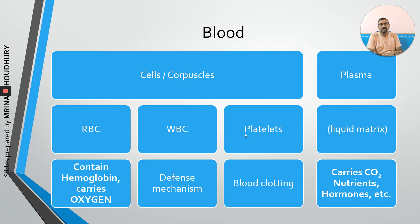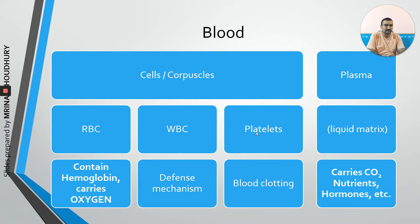WBCs and platelets are not involved in transportation. WBCs are mainly responsible for the defense mechanism, helping us fight against foreign pathogens. Platelets are mainly responsible for blood clotting — whenever there is an injury in a blood vessel, platelets become functional and clot the blood to prevent blood loss.